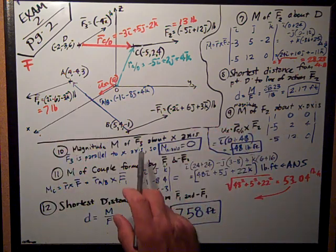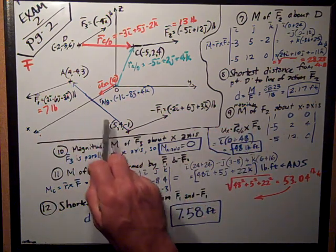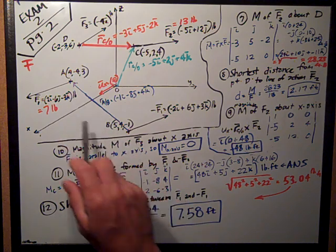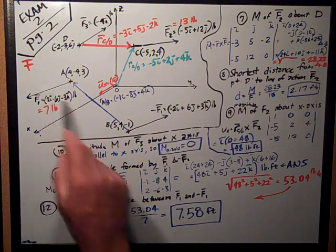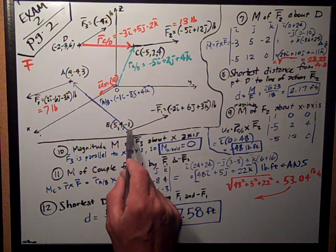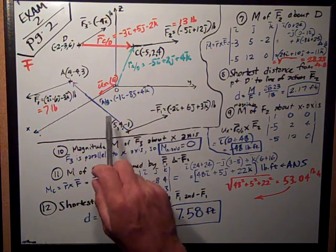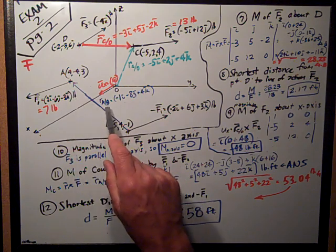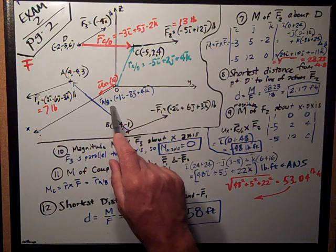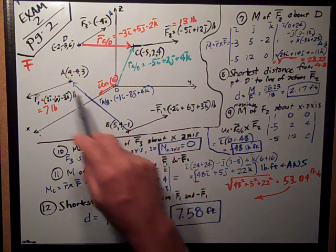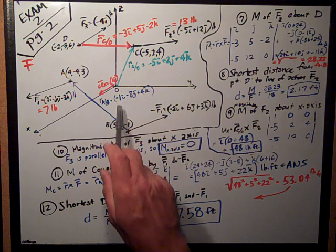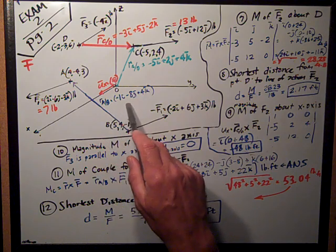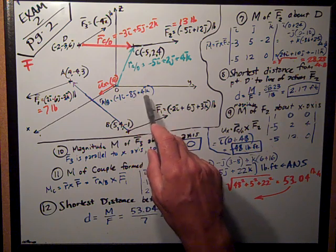I can take a position vector from the known points and get the cross product of either one of these about the other one's point of application. I chose to do the position vector from b to point a, which is ra over b, which is just subtract the coordinates, 4 minus 5 is negative 1, and so forth. R i b is negative 1i minus 8j plus 4k.